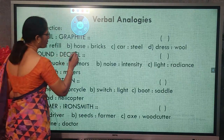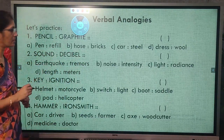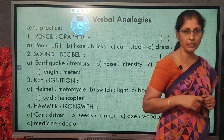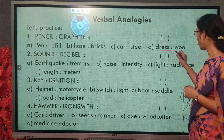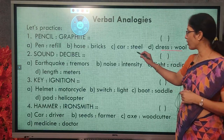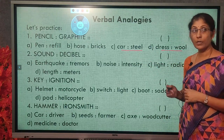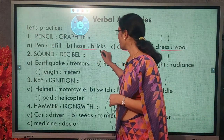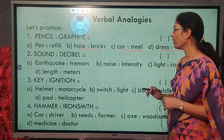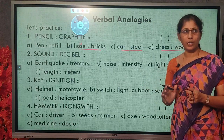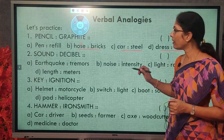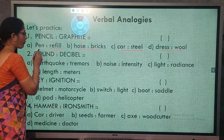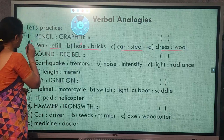Now let us look at the choices: pen and refill, house and bricks, car and steel, dress and wool. Dress is made of wool, car is made of steel, bricks are used to construct a house — but in those cases we do not use the material to do something specific. Graphite is a part of pencil that is used to write, so refill is a part of the pen that is used to write. So pen and refill is the answer.